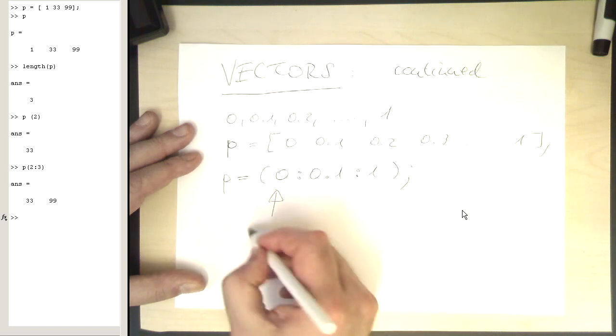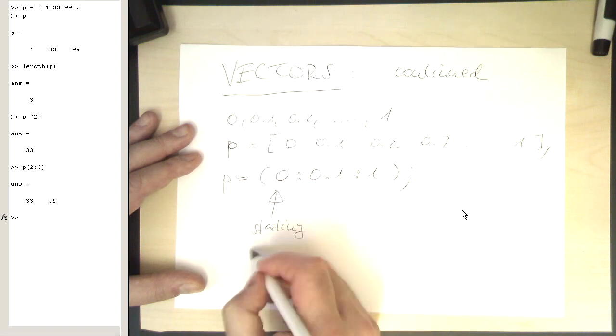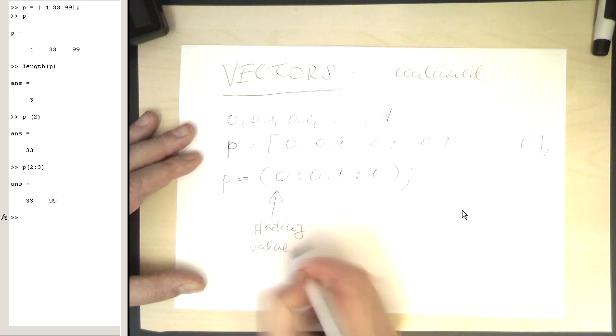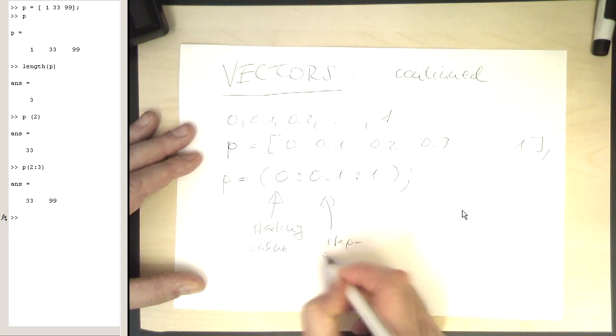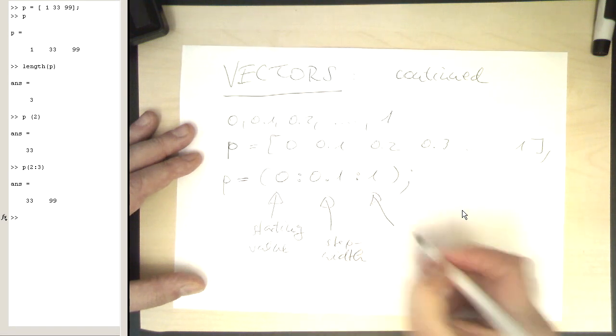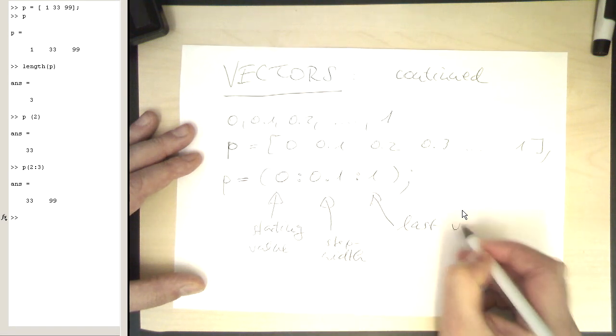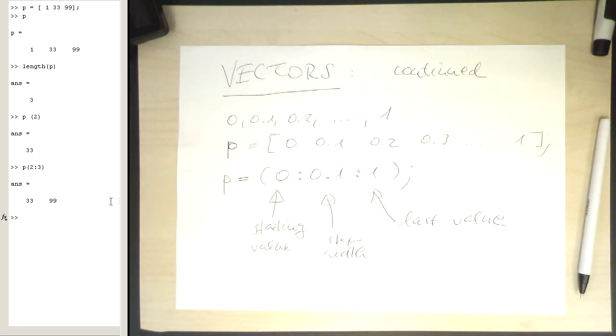Whereas the 0 is the starting value, this is the step width, and this is the last value. So let's do this here in MATLAB.